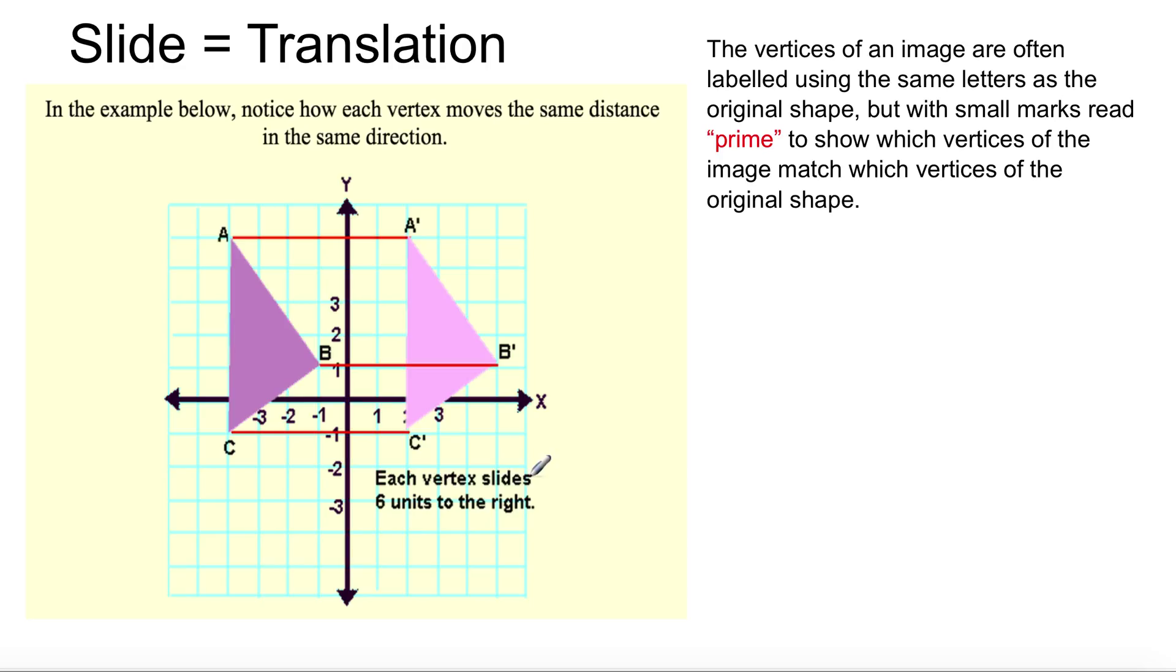Now, it's moving 6 to the right, positive. So from negative 4 to positive 2. So your translation vector is 6. That's it. It doesn't move up, doesn't move down, just move to the right 6 units.